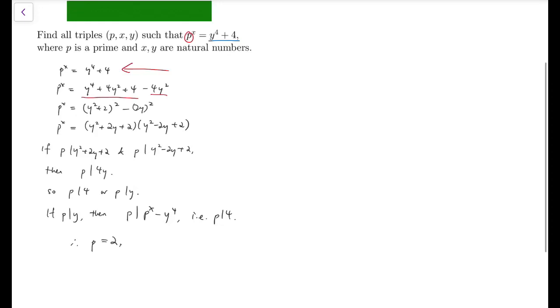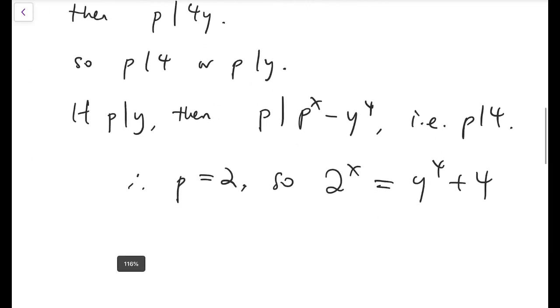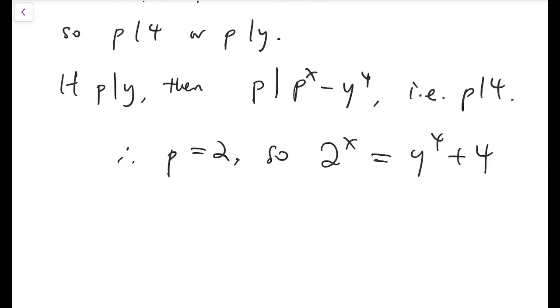Now, if p is 2, so 2 to the x equals y to the 4 plus 4. But now, we know that 2 to the x is even, obviously, and 4 is also even, so y to the 4 is also even. And y is even, because we cannot have an odd power to be even, right? And so y is even, and y to the 4 is now divisible by 16.